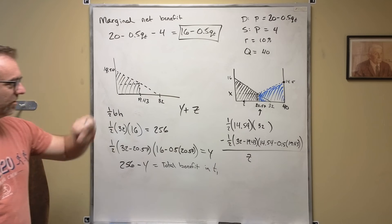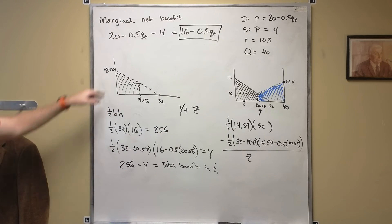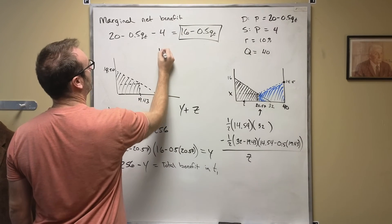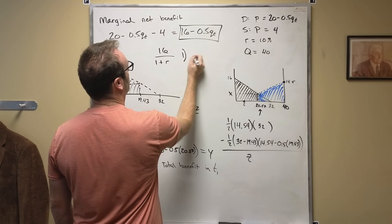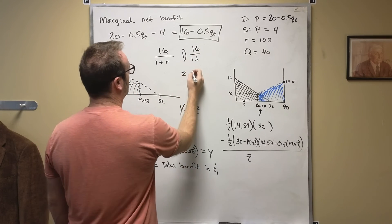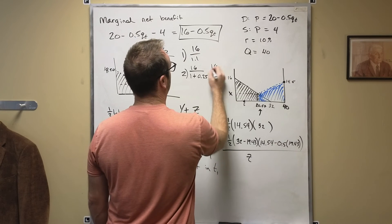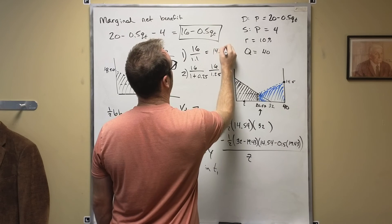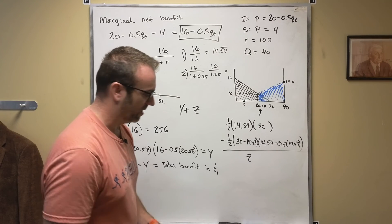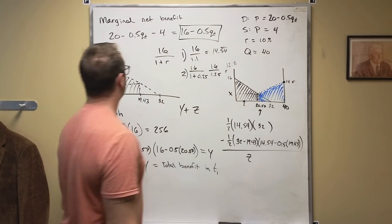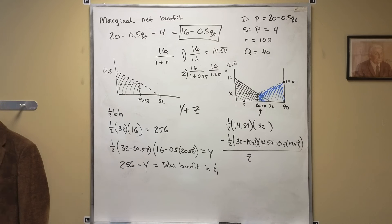That is how you solve parts A, B, and C. Remember the trick: to calculate the T2 intercept, take 16 and divide it by 1 plus R. For number one, we did 16 over 1.1. For number two, you're going to do 16 divided by 1 plus 0.25, which is 16 over 1.25. This was equal to 14.54 before, and 16 divided by 1.25 equals 12.8. So what you would do is the exact same thing, except instead of having 14.54 you'd have 12.8 — and that's it, that's how you solve it.